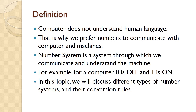Definition. As you know, the computer does not understand human language — it understands only binary language. We will know about binary language in the coming slides. But first of all, let us understand what is a number system. A number system is a system through which we communicate and understand the machine. For example, a computer understands 0 as off and 1 as on. In this topic, we will discuss the different types of number system and their conversion rules.